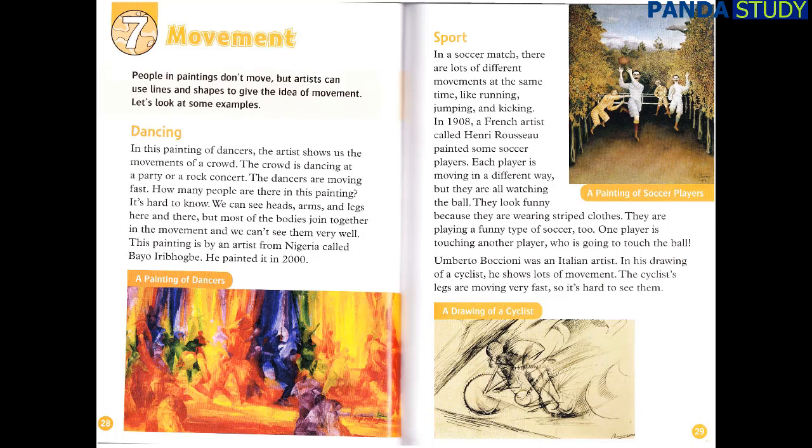Sport. In a soccer match, there are lots of different movements at the same time, like running, jumping, and kicking. In 1908, a French artist called Henri Rousseau painted some soccer players. Each player is moving in a different way, but they are all watching the ball. They look funny because they are wearing striped clothes. They are playing a funny type of soccer, too. One player is touching another player who is going to touch the ball. Umberto Boccioni was an Italian artist. In his drawing of a cyclist, he shows lots of movement. The cyclist's legs are moving very fast, so it's hard to see them.